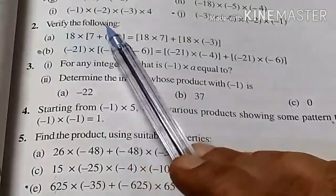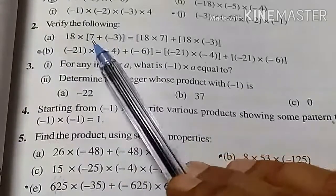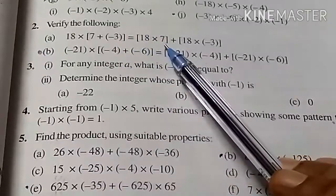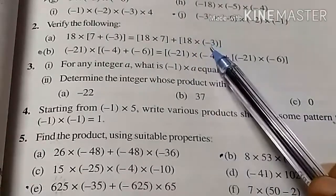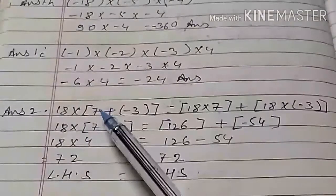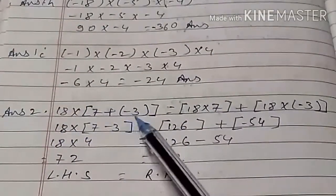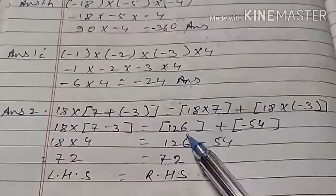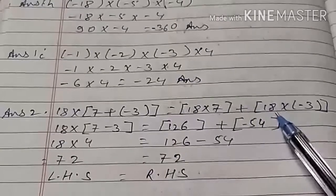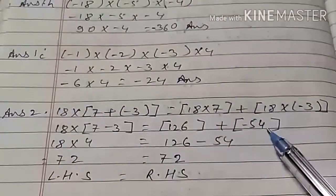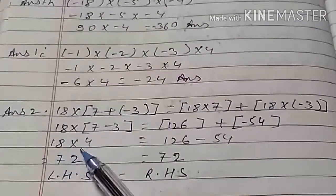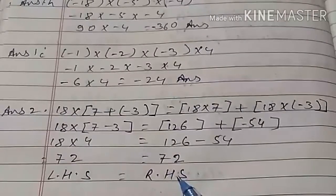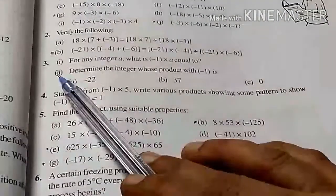Question number 2, verify the following. A: 18 multiply (minus 7 plus minus 3) equal to (18 multiply minus 7) plus (18 multiply minus 3). First, we open the bracket: minus 7 plus minus 3 equals minus 10. So 18 multiply minus 10 equals minus 180. On the right side, 18 multiply minus 7 is minus 126, plus 18 multiply minus 3 is minus 54, giving minus 180. Both left hand side and right hand side tally each other, equal to minus 180.